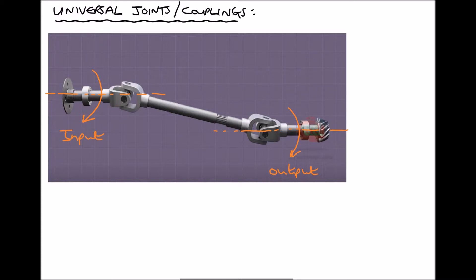We have two universal couplings, and in between we have something called a propeller shaft, also known as a prop shaft. The difference in angle between our input and propeller shaft is known as the articulation angle. We have an angle here which is the difference between the axis of rotation for the input and the prop shaft — that's our articulation angle.